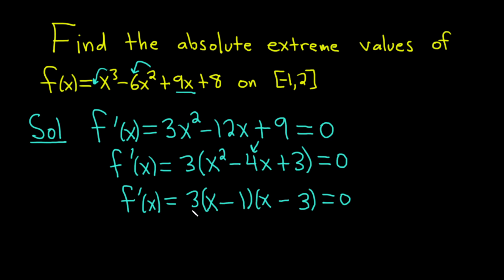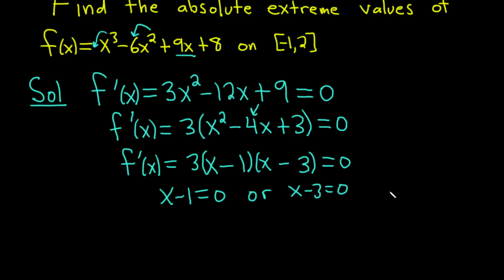Great, so we have a product equal to 0, so we can set each factor equal to 0. You don't have to worry about the 3. We get x - 1 = 0, or x - 3 = 0. Solving these gives x = 1 and x = 3.